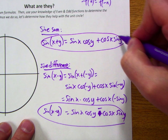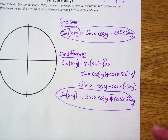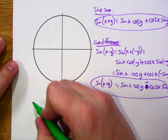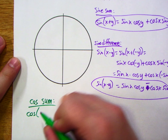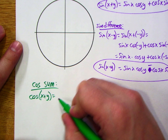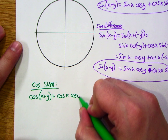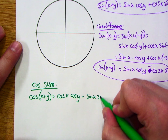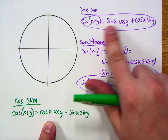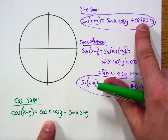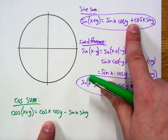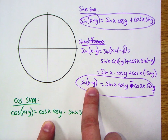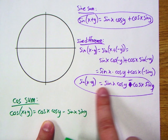Now let's look at our cosine sum and difference formulas, starting with the cosine sum formula. Cosine of x plus y equals cosine x cosine y minus sine x sine y. Looking at the structure: with sine, we go sine-cosine plus cosine-sine, keeping the same sign. With cosine, a positive sum creates a minus between the terms. These are the key structural differences to memorize.